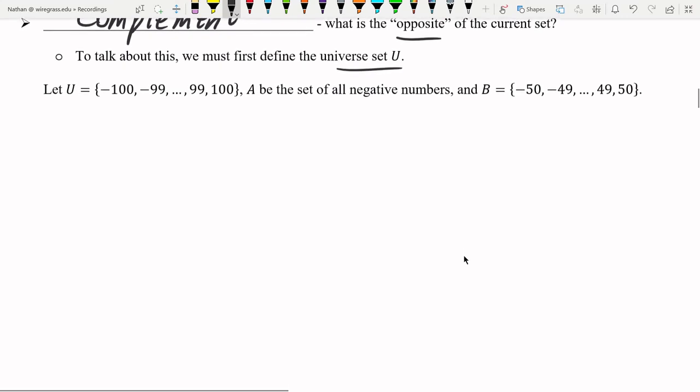So for us, of course, the universe is going to be a set of numbers. In this case, I have the universe set is the numbers from negative 100 to positive 100. No decimal numbers in there.